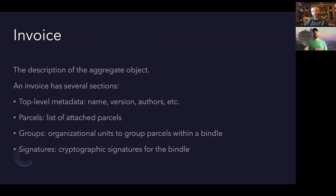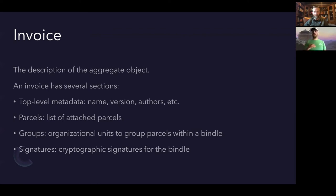So what's the invoice? An invoice is a description of the whole thing altogether. It has top-level metadata — things you'd normally expect like name, version, and authors — as well as additional annotations. Then you have a parcels list, which is the list of each attached parcel. Each invoice can also have a set of groups that gives you a way to organize different parts of the bindle together, and there is also a section for signatures which we'll talk about in a moment.